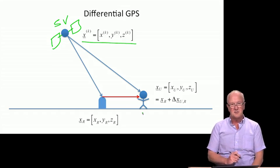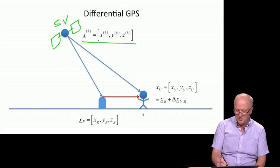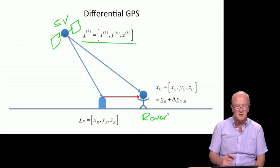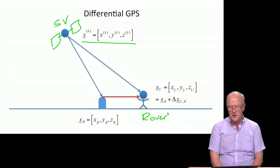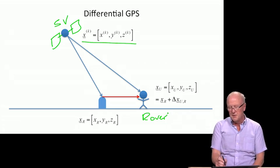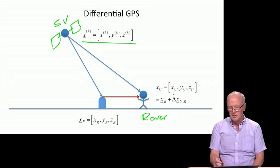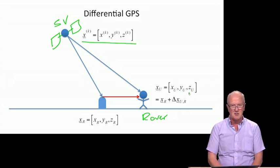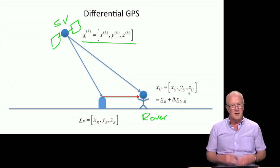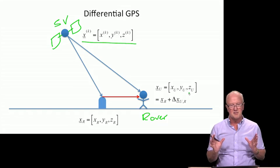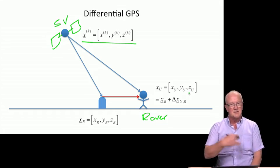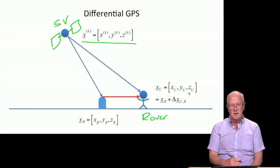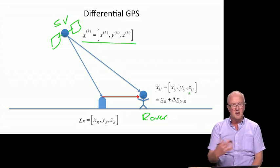So that's you or I wandering around the countryside trying to find out where we are. And so the unknown there is x sub u, xu, yu, zu, three dimensions of position, all of which we would like to estimate. Now, the big difference in differential GPS, and this is really the defining difference, is that somewhere in our neighborhood, maybe a mile away, maybe a hundred miles away, maybe a thousand miles away, is a reference receiver.